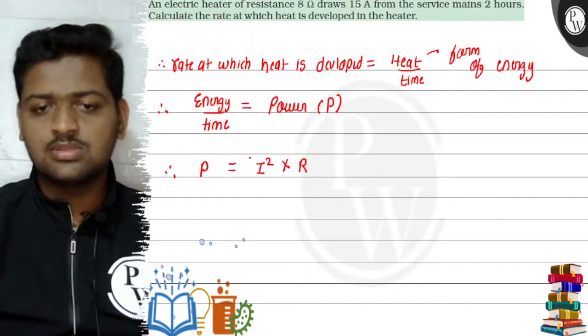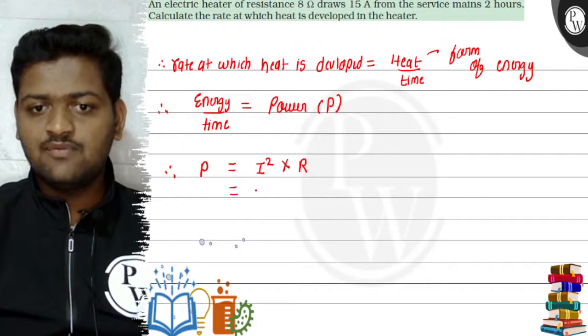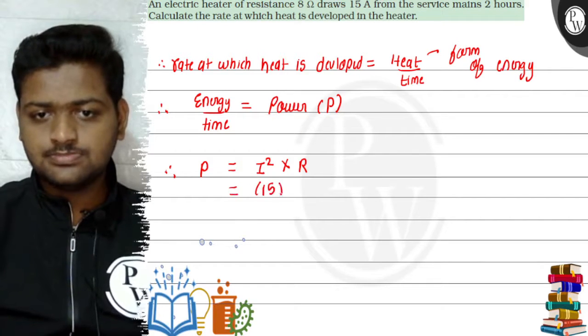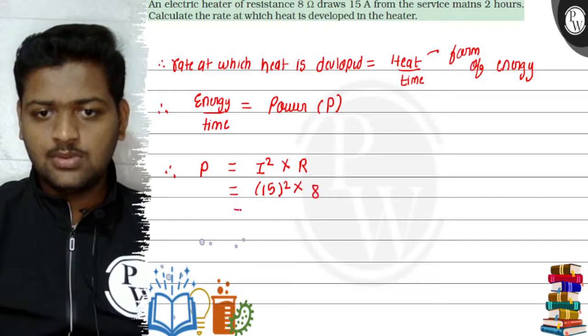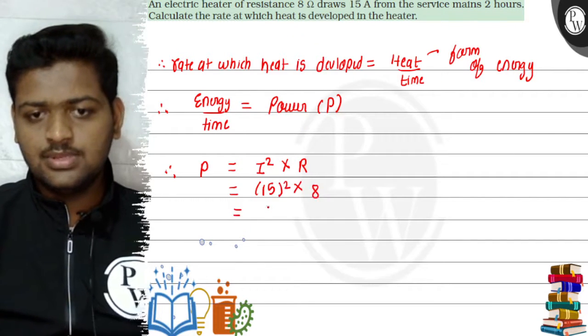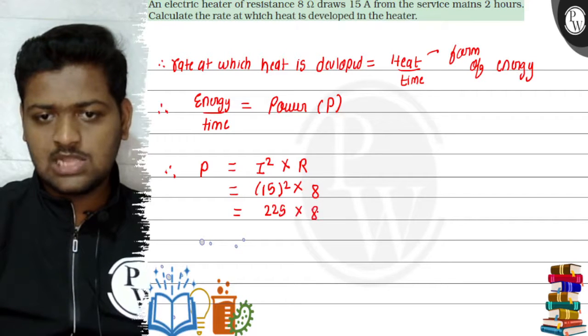So it is I square R. So it is nothing but 15 square into R resistance 8 ohms. Okay, so it is nothing but 225 into 8. We will calculate this.